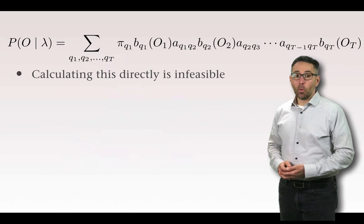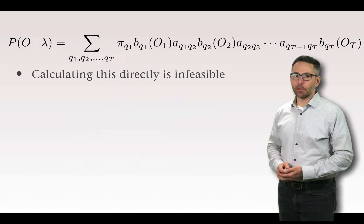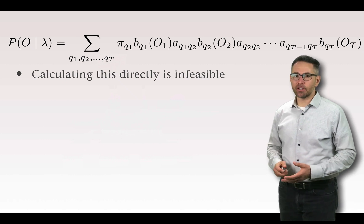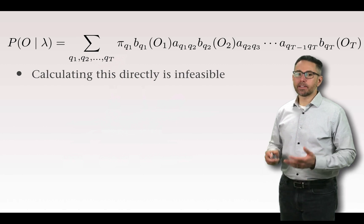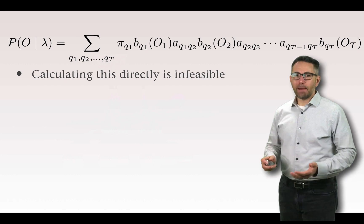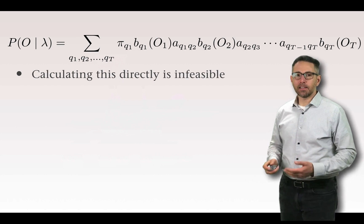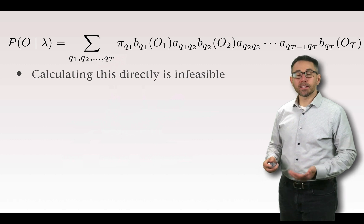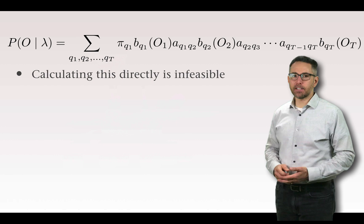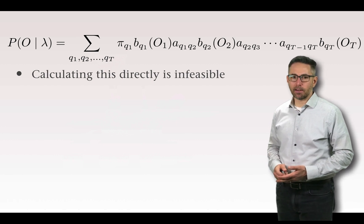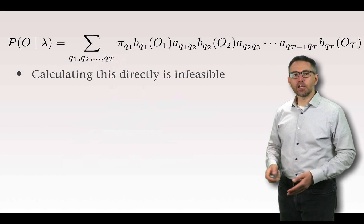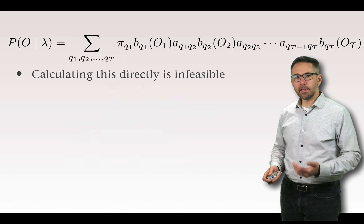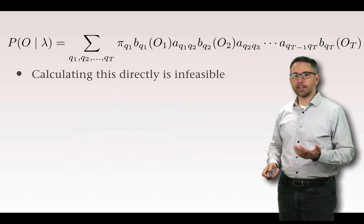Where we left off was recognizing that calculating the probability of a set of observations given the parameters of our model lambda was infeasible to do directly. We imagined that we would enumerate all possible transitions through the state space given a length of observations capital T, and for each enumerated sequence of states we would sum the probability of that particular state sequence giving us the observations we've seen. We were able to calculate that using parameters pi q1 — the probability of starting in state q1.